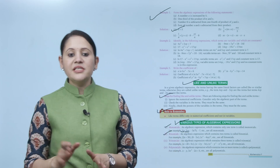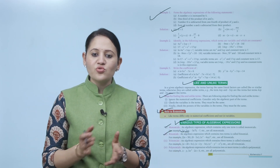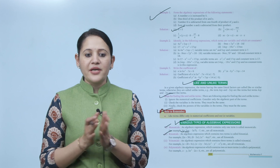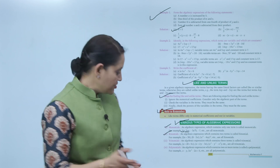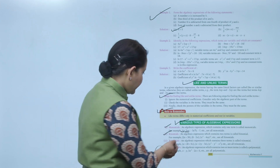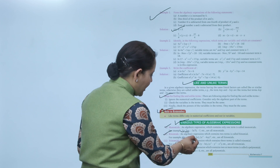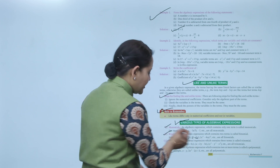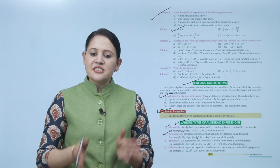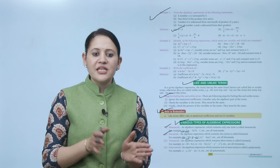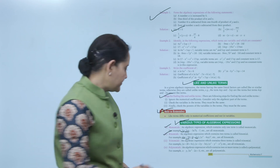Next is binomial. 'Bi' means 2. An algebraic expression which contains two terms is called a binomial. For example, 2a + 3b has two terms, and 8 − 3x also has two terms — so any algebraic expression with just two terms is called a binomial.